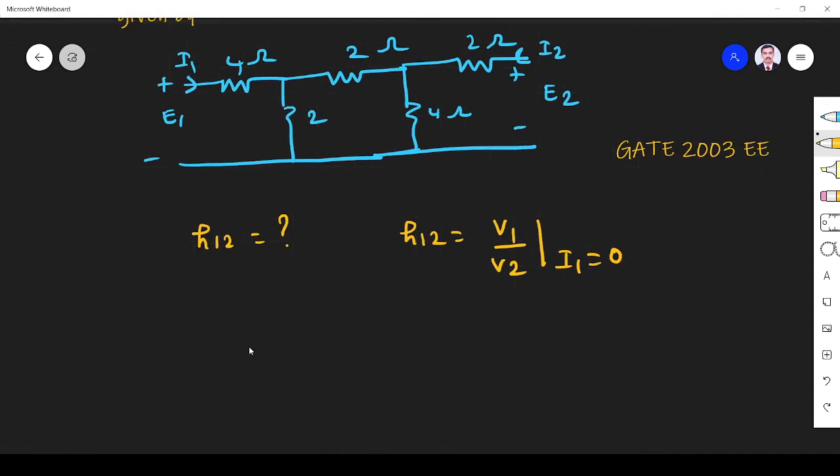h12 is v1 by v2 with i1 equals 0. The h parameter equation is v1 equals h11 i1 plus h12 v2. So I want to find h12 only.